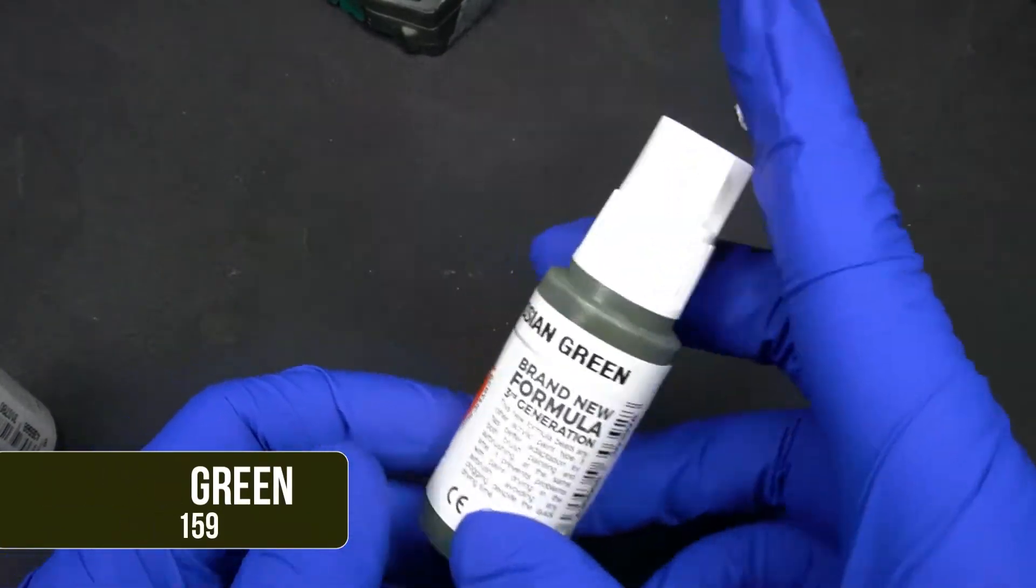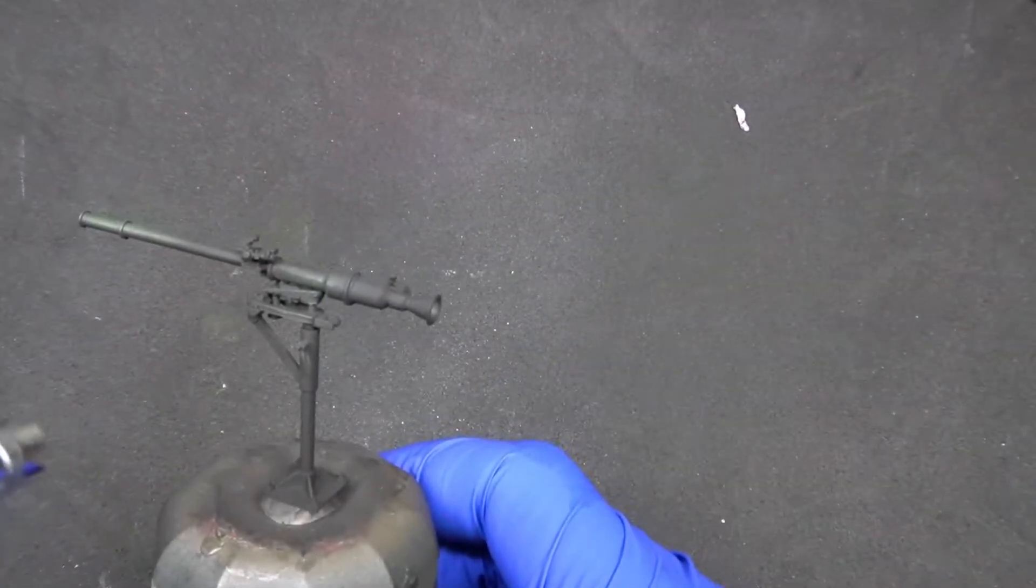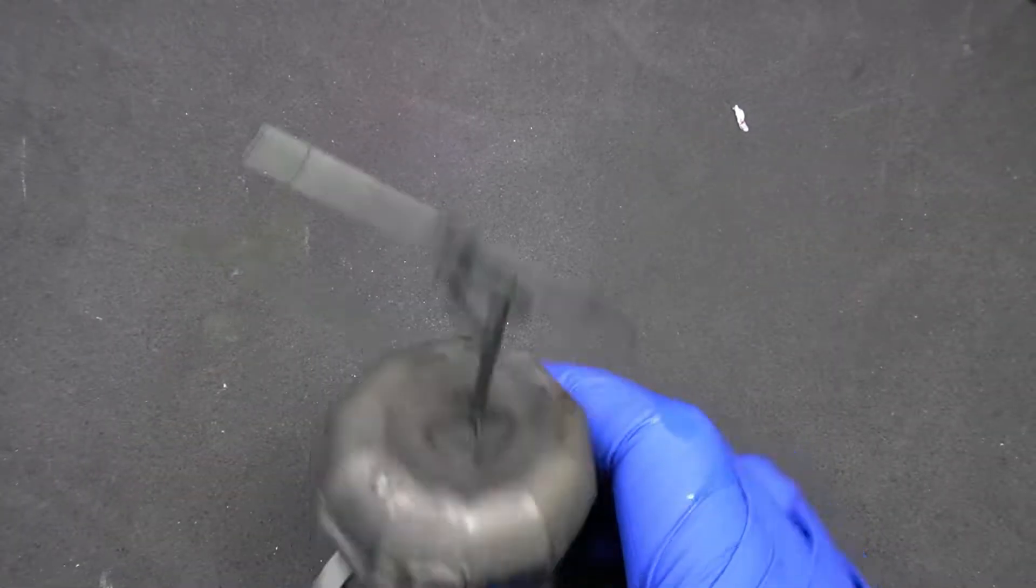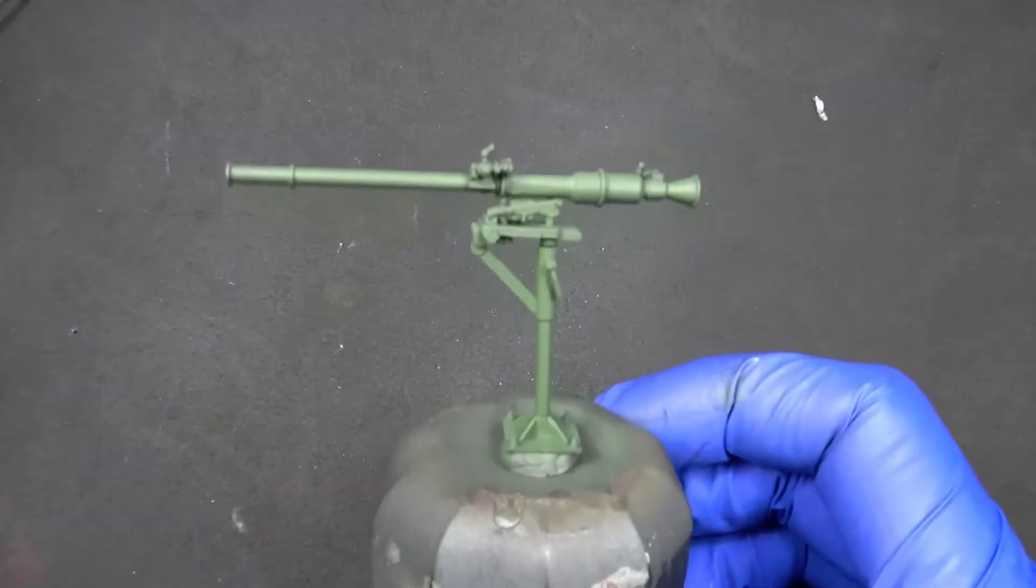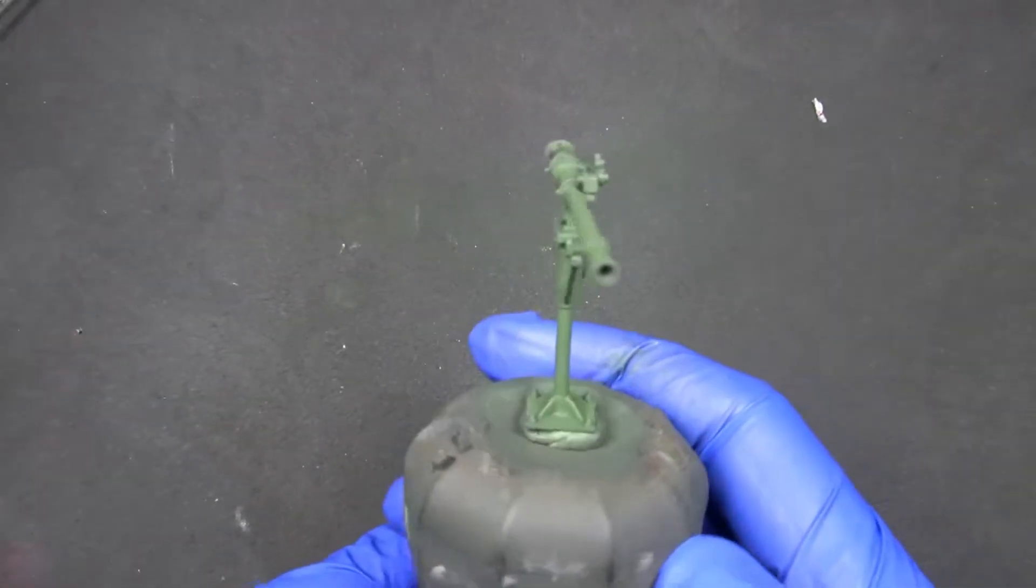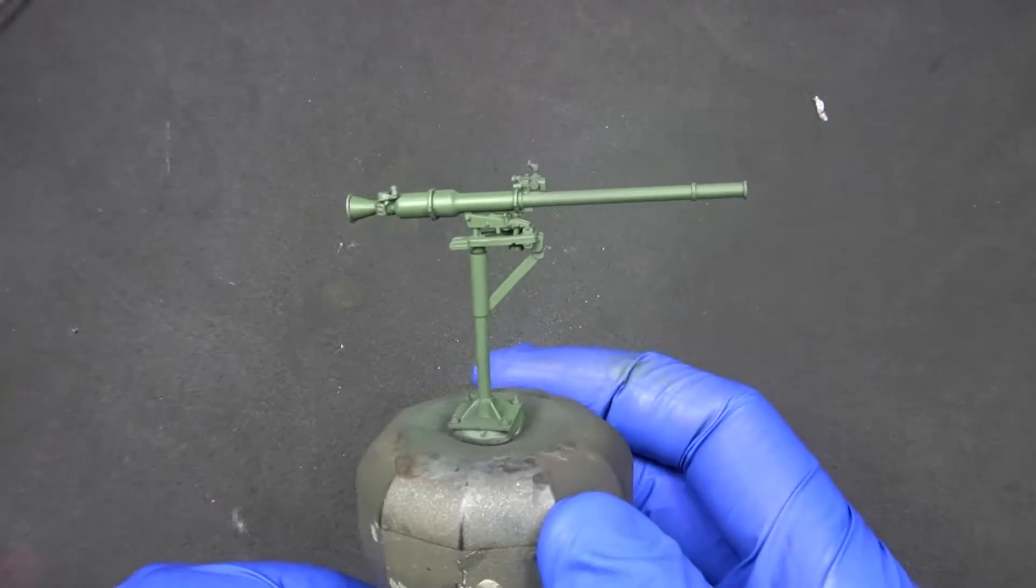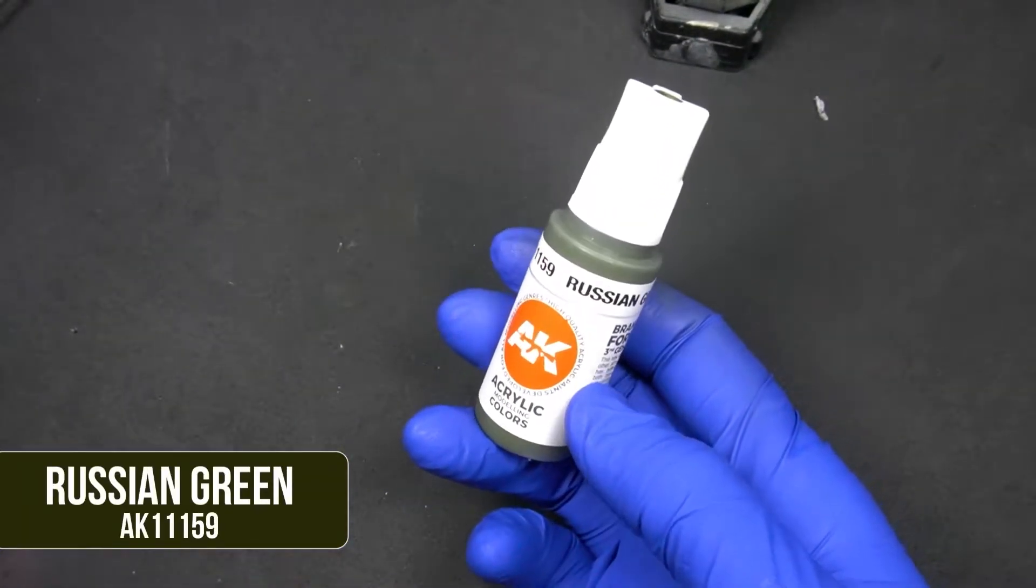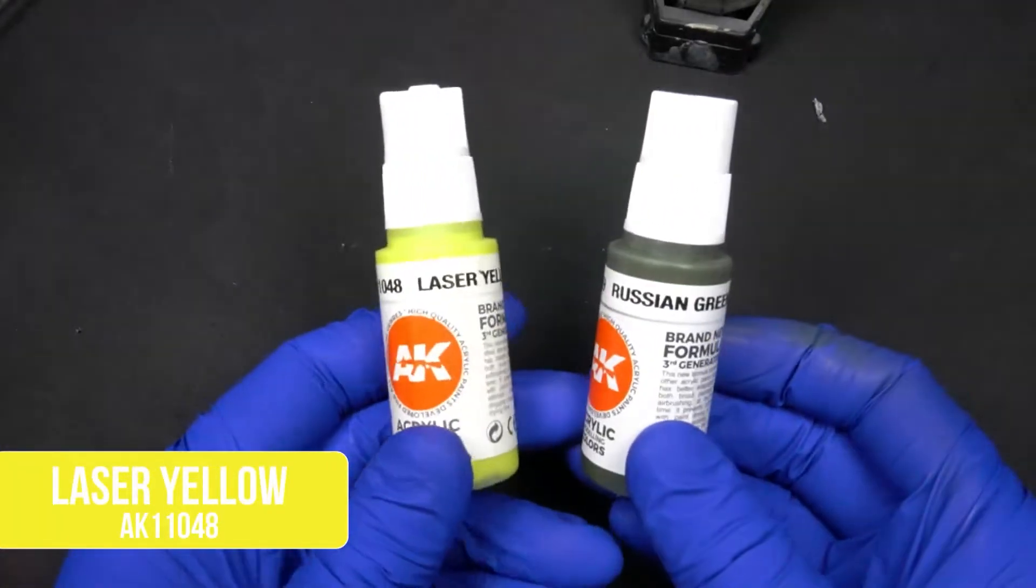Now we'll paint the SPG9, which is a recoilless gun developed by the Soviet Union. And obviously, for painting something from the Soviet Union, we'll use Russian green as the base color. Here's a little trick. To highlight any green color, we can use yellow. In this case, the yellow we are using is very saturated. The color is called laser yellow.